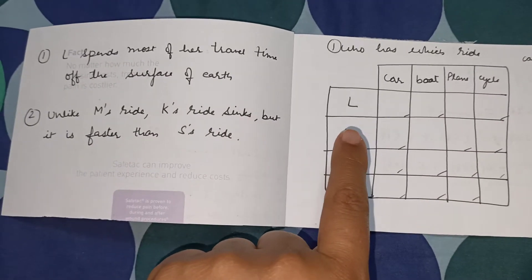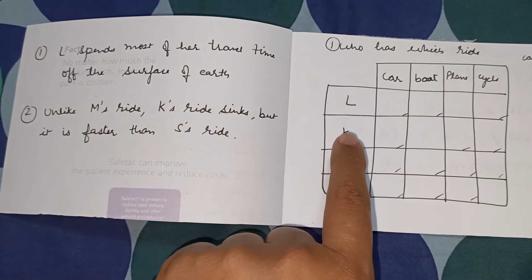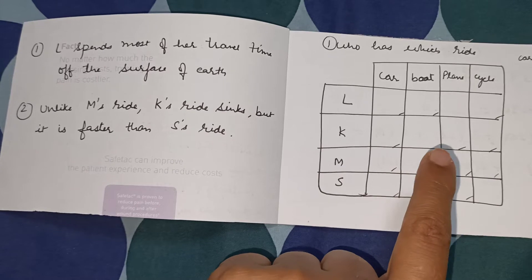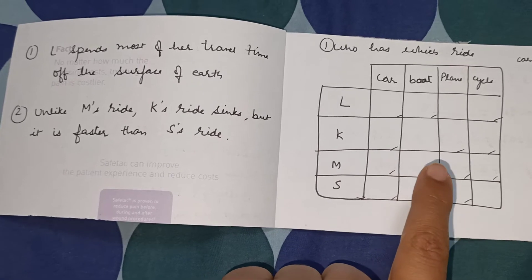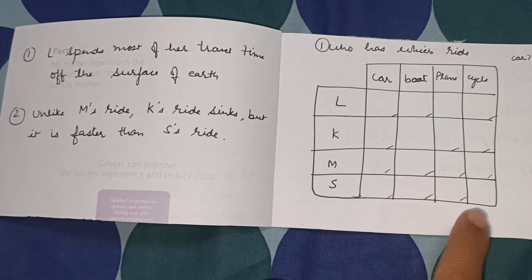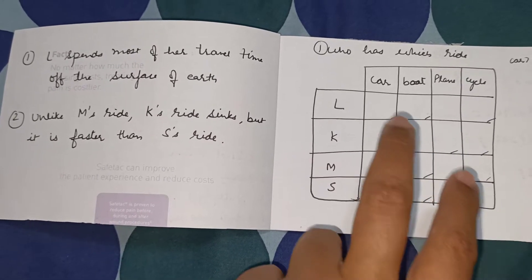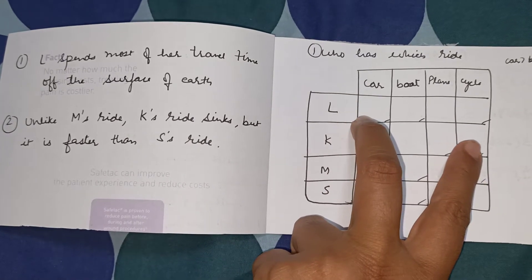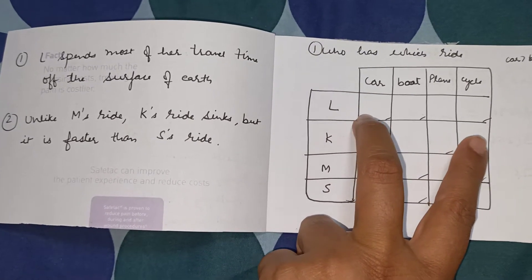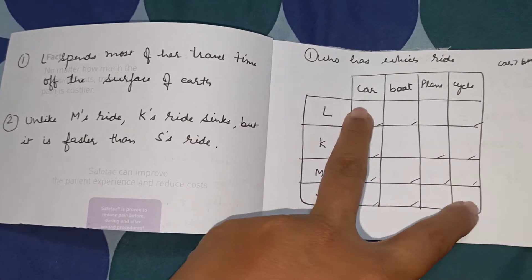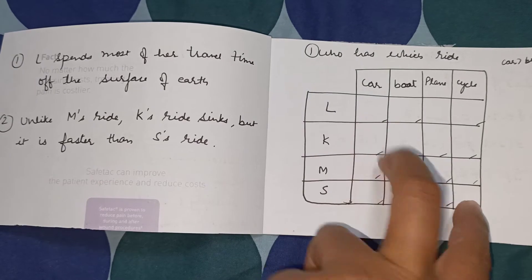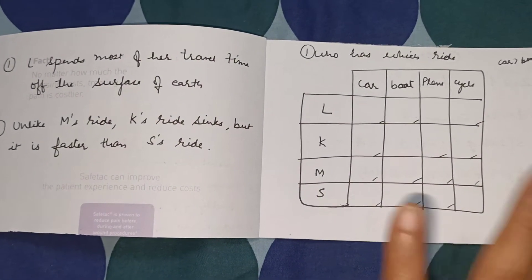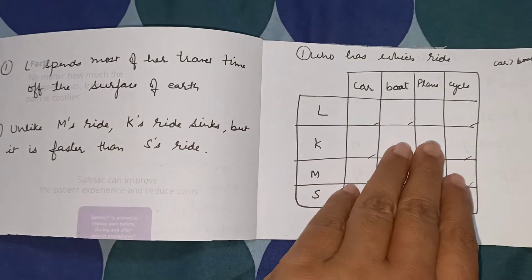The second question is: unlike M's ride, K's ride sinks — meaning K's ride would be a boat — but it's faster than S's ride. M has the option of car and cycle, and M's ride is faster than S's ride. So S's ride is cycle and M's ride is car. That's how this very easy critical thinking question works.